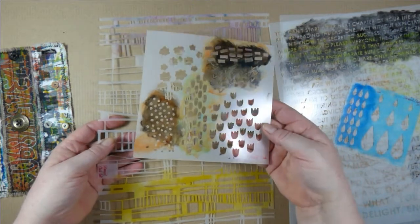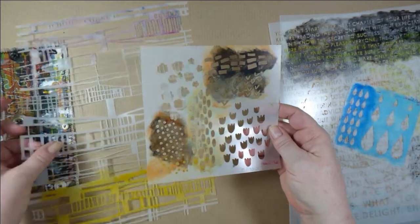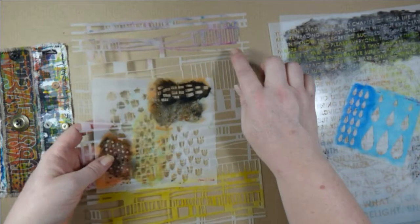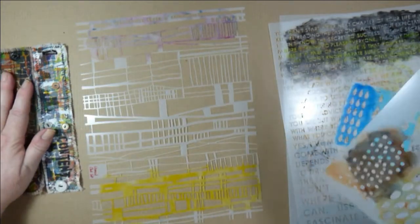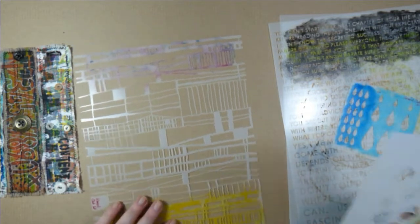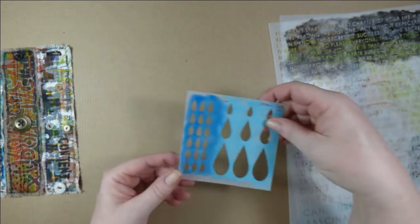Then I used a kit from the stencil club kits, this one designed for me by Mary Beth for the October 2016 kit. This one's really good for mark making. I love this one and this was the one I started out with on the cuffs to have a first layer to work on.